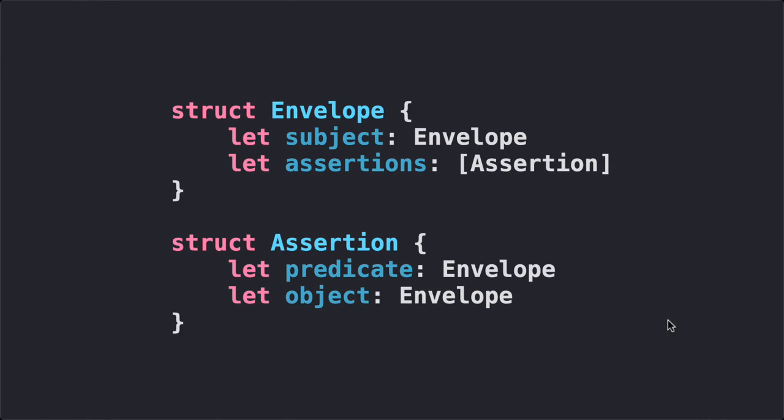Basically, an envelope consists of a subject, which is also an envelope, and a set of assertions — zero or more assertions. Assertions themselves consist of a predicate, which is an envelope, and an object, which is an envelope. The basic form of an envelope is what would be called a semantic triple, like Alice knows Bob: subject, predicate, object.